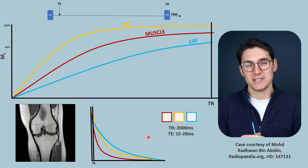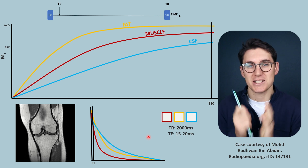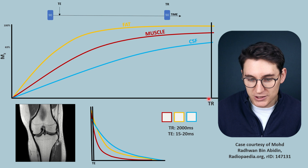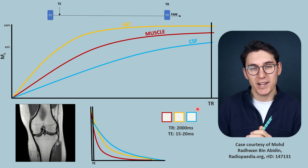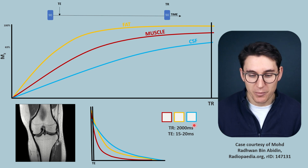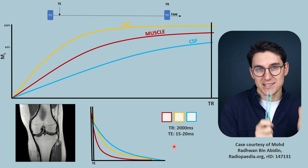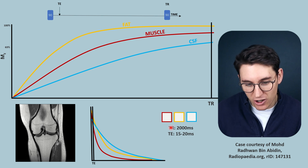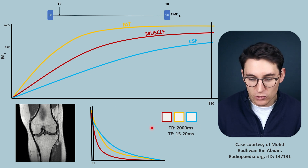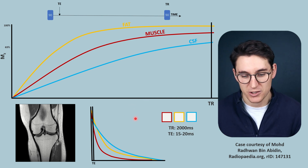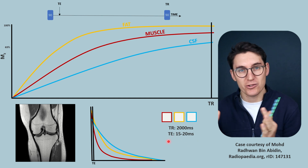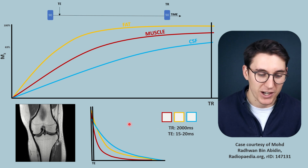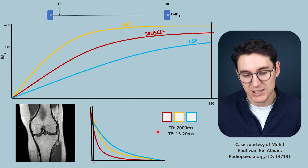For remembering TR and TE values: exams typically give values and ask you to identify the weighting type. Long TR times are around 2000 milliseconds — in the late thousands range. Short TE times are in the tens, around 10 to 30 milliseconds; longer TE times are in the 80 to 160 range. If a TR is in the hundreds — 300 to 600 — that's a short TR. If a TE is closer to the hundreds rather than tens, that's a longer TE. Knowing these orders of magnitude lets you identify image weighting from TR and TE values.